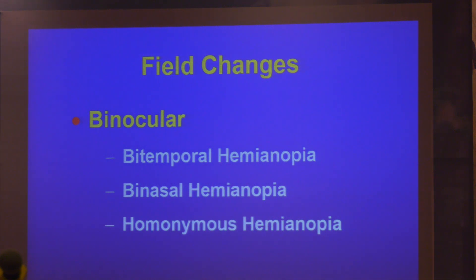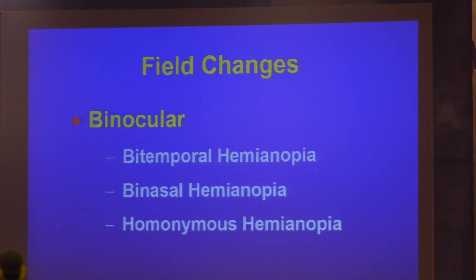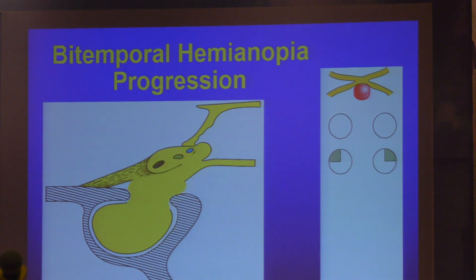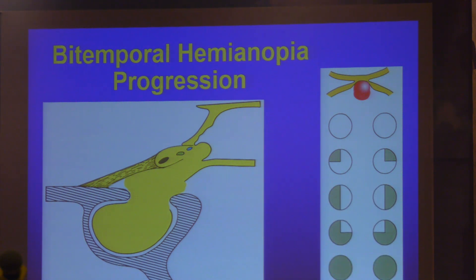Binasal field defects also occur at the chiasma — bilateral, which is very, very rare. Homonymous defects occur in the tract, radiation, and the visual cortex — very simple. Bitemporal can occur only in the sellar region; binasal only in the sellar region; and homonymous only in the tract and below. Bitemporal is commonly due to sellar and parasellar lesions: craniopharyngioma or pituitary adenomas — anything which pushes the uncrossed fibers. MRI is now much more precise and easier, though sometimes I feel sorry we don't use our brains to think as much anymore.